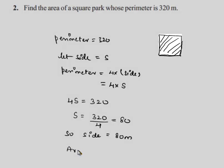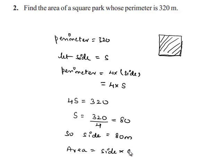We get area of square as side into side, that is equal to 80 meters into 80 meters, that is equal to 6400 square meters.